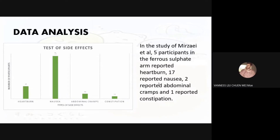We found some data to support our claims. Regarding the side effects of ionic and covalent compounds on our bodies, in a test by Mirzai et al., out of five participants, some reported side effects: heartburn at 70%, two reported nausea, two reported abdominal cramps, and one reported constipation.